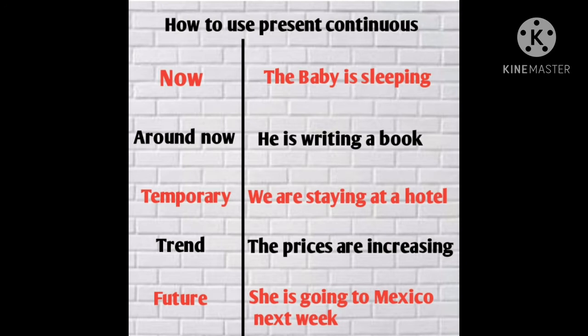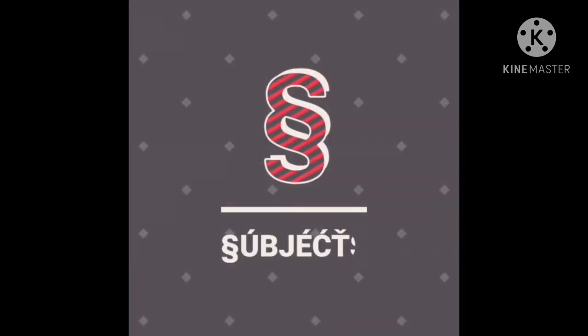The next use is for trends. For example, the prices are increasing. Then, for the near future: she is going to Mexico next week. This is really important — for near future actions, we can use the present continuous.